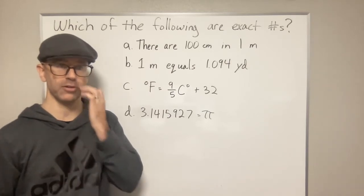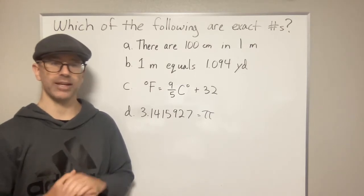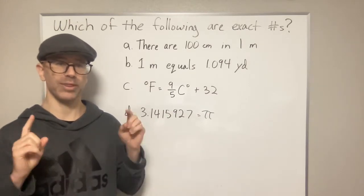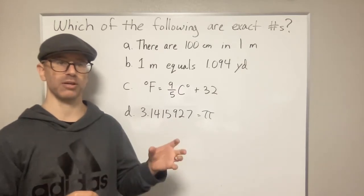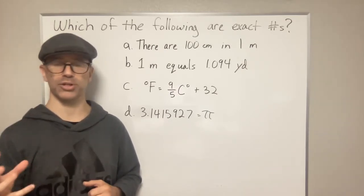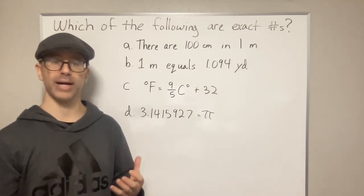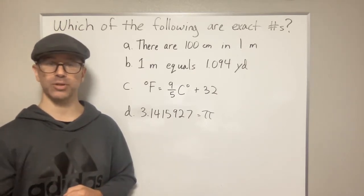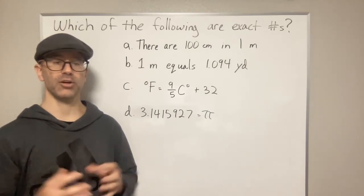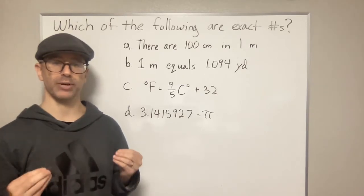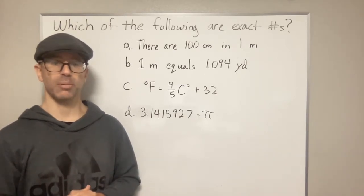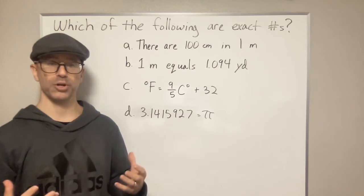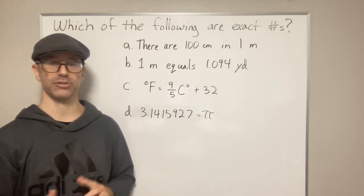So one of the things I always tell my students is what you should be looking out for is anytime you have a relationship between either a metric unit and another metric unit within the same category, like a metric unit of length compared to another metric unit of length, then that's going to be exact. It's going to be true by definition. The number of significant figures is going to be infinite, so you don't have to worry about those when you're trying to figure out how many sig figs your answer should be in.